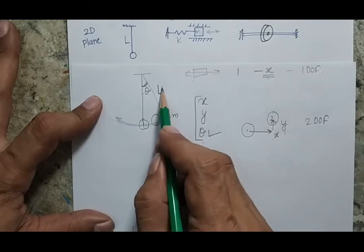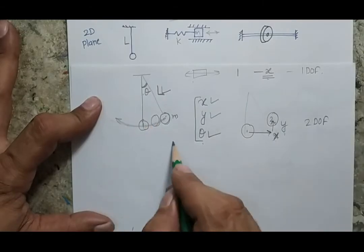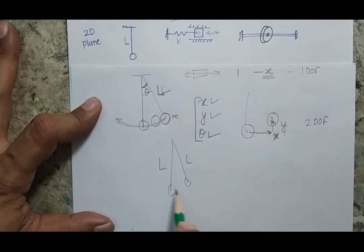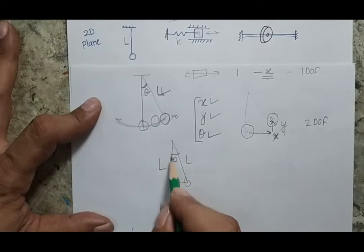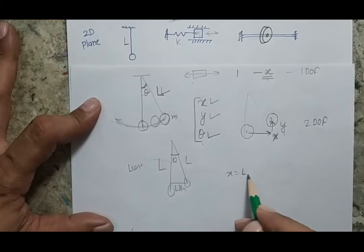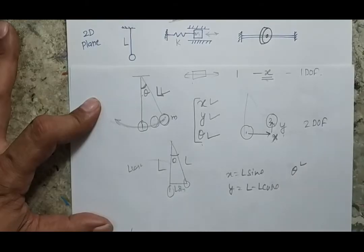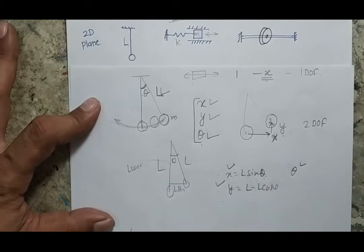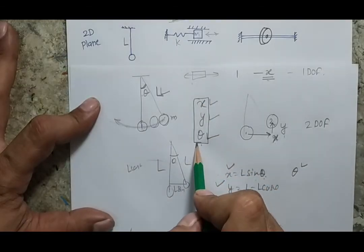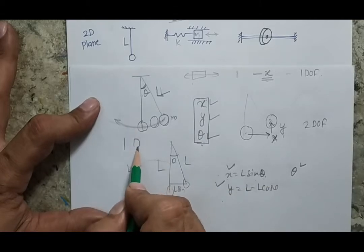If you know theta and the length l, you can get x and y. Specifically, x = l·sin(θ) and y = l − l·cos(θ). So if I know theta, I can write x and y in terms of theta, meaning x and y are not independent — they are functions of theta. These three variables are interconnected: knowing one gives the other two. Therefore this system has only one independent motion, i.e., one degree of freedom.